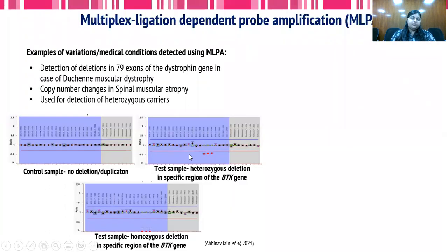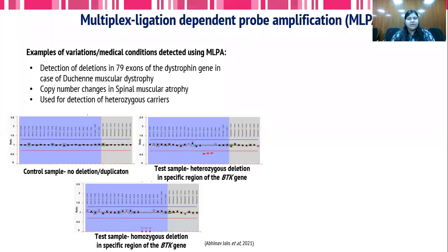Common conditions in which MLPA is undertaken include DMD — Duchenne muscular dystrophy — in which deletion of any of the 79 exons could be easily detected using MLPA. Copy number changes in case of spinal muscular atrophy are also very commonly identified using MLPA. This technique can also be used for detection of heterozygous carriers, as it can tell us the copy number and differentiate between homozygous and heterozygous conditions.